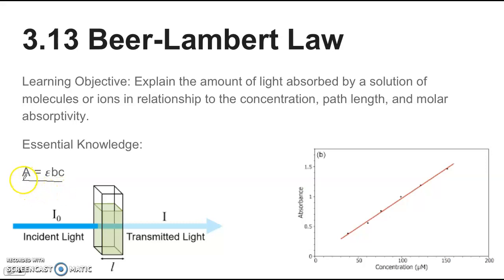A represents absorbance. It looks like an E, but it's epsilon. That represents molar absorptivity. b represents path length, and c is concentration.